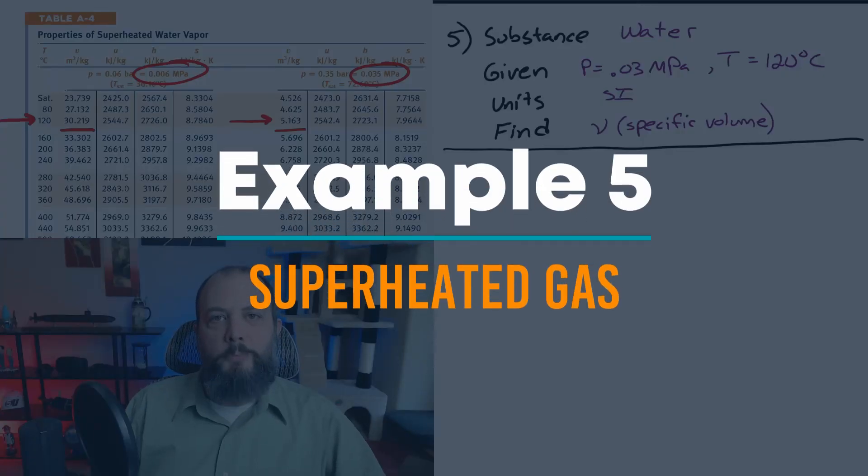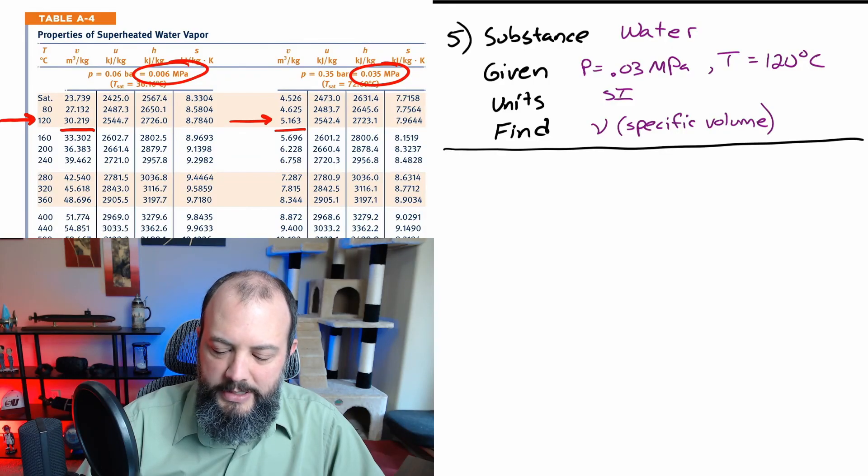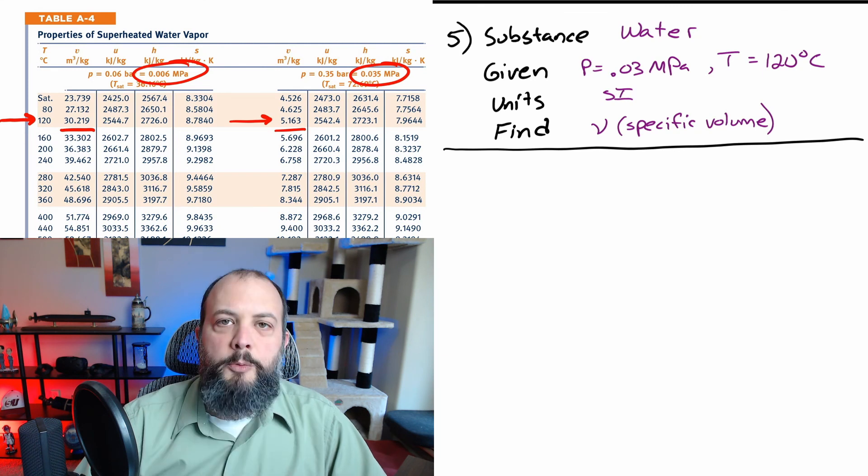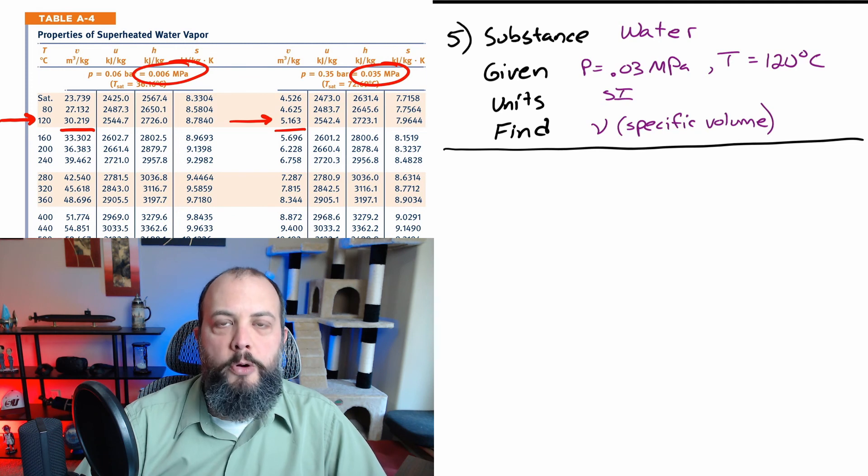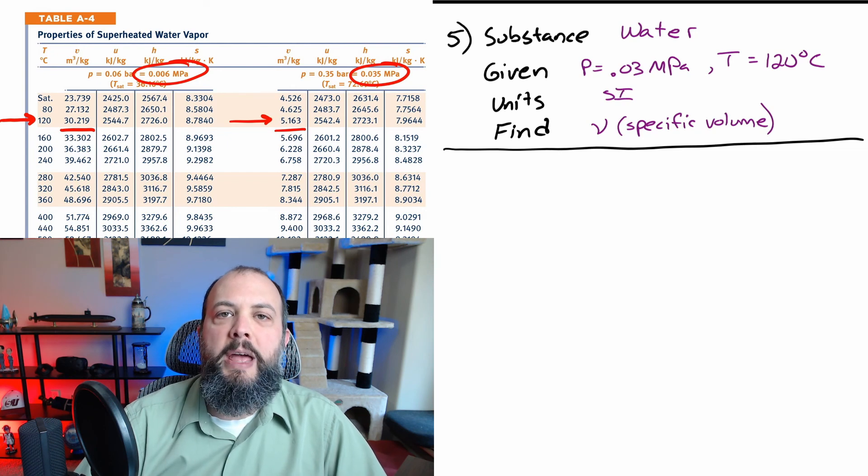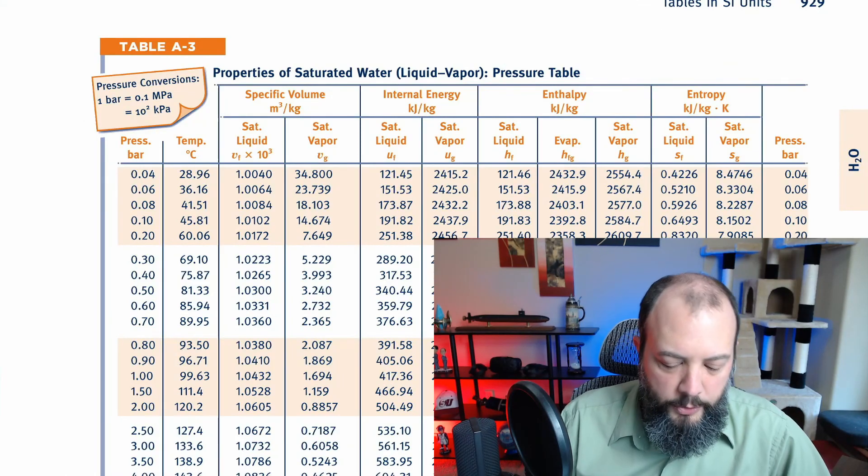Example five, almost done. This time we have a substance of water, pressure in megapascals, temperature in Celsius. So we're going to be in the SI tables. But one clue that this is probably not going to be the saturated water tables that we're given both temperature and pressure. For saturated liquids, temperature implies pressure, or if you're given pressure that only occurs at one temperature. So the fact that we're given both is a clue that we may actually be in the compressed liquid or superheated gas tables. But if you weren't sure which, you could come to the saturated water table first, find that 0.03 MPa is 0.3 bar. And notice that the temperature there is 69.1 degrees. Since our temperature is 120 degrees, which is higher than the temperature here, we know that that would actually be a superheated gas.